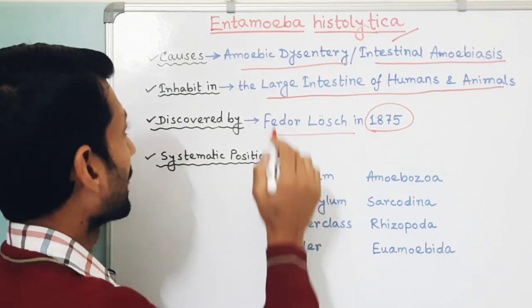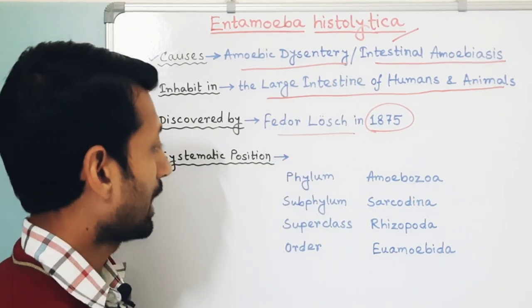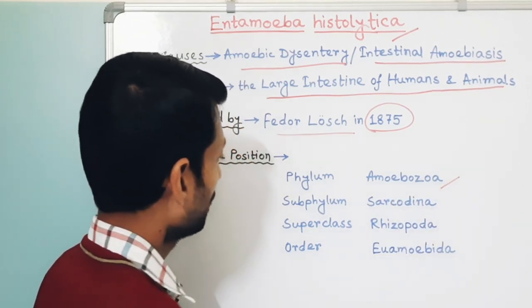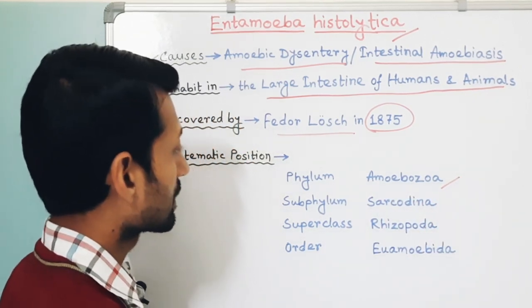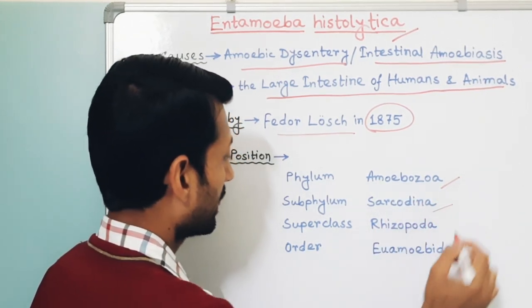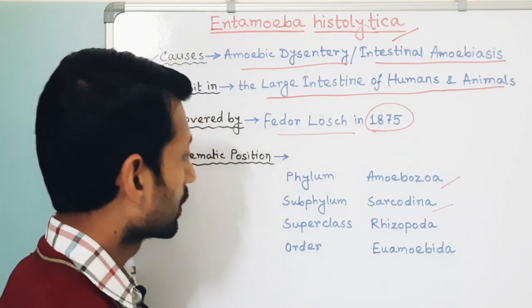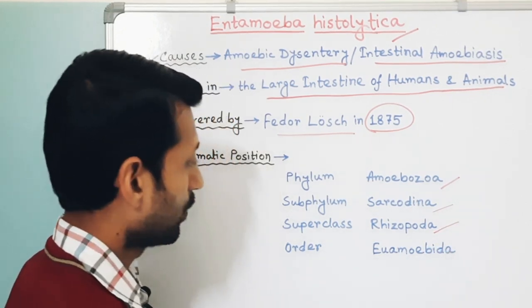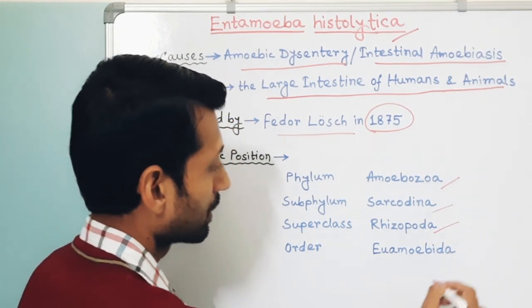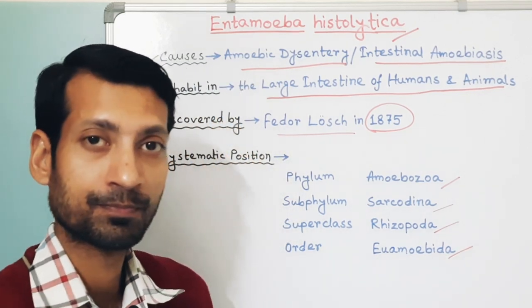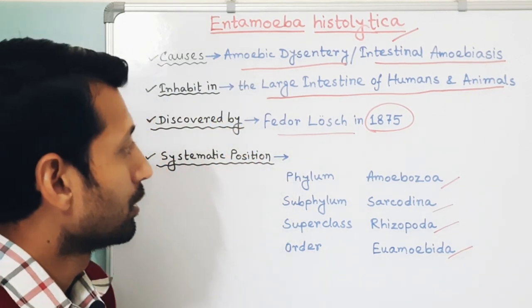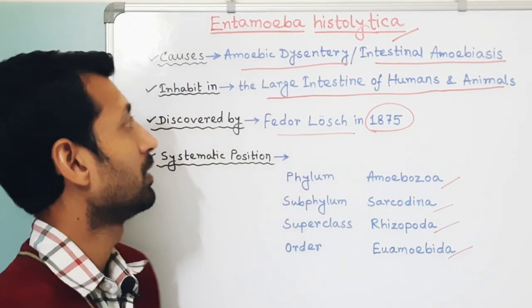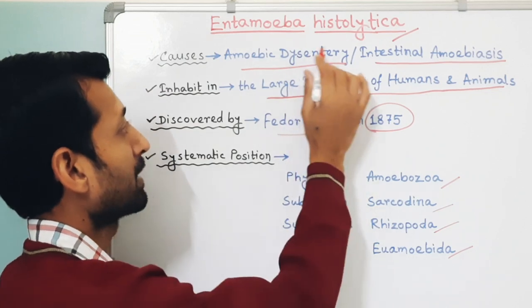Entamoeba histolytica comes under phylum Amoebozoa, subphylum Sarkodyna, superclass Rhizopoda, order Amoebida. These are the introductory details of Entamoeba histolytica.